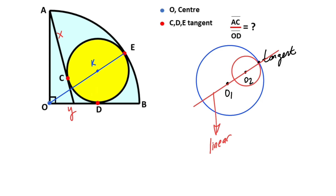Now let's draw a perpendicular line. Notice that here is a tangent point, so this angle must equal 90 degrees. Likewise, if you draw one more perpendicular here, this angle is also 90 degrees. I want to represent the radius of the small yellow circle with lowercase r, so these segments are also r units. Let's call the radius of the quarter circle uppercase R.